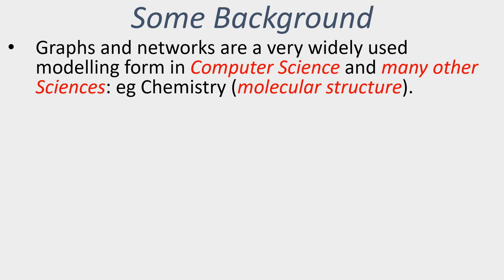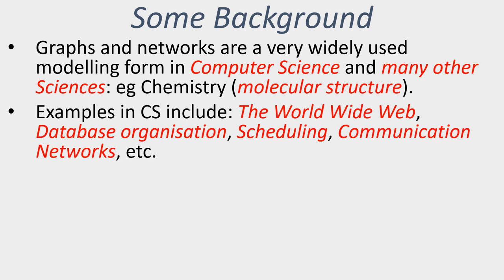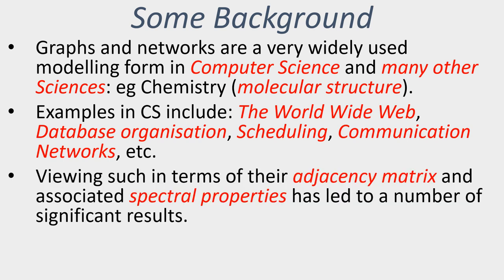Just to give some background, graphs and networks are very widely used modeling forms, not only in computer science but in many other physical sciences as well. For example, traditionally graph-type structures have been used to model molecular form in subjects such as chemistry, which is another field where spectral analysis has played a very important role. Examples in computer science include structures such as the world wide web, organization of databases, scheduling applications, and communication networks, which is a model using graph structures that dates right back to some of the early work in computer science in the late 1940s and 1950s.